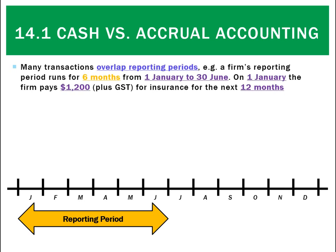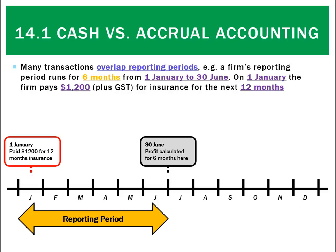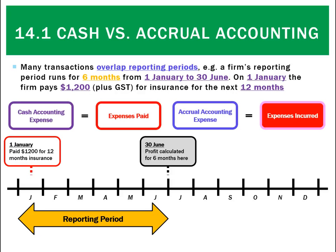The reason why is that many transactions overlap reporting periods. For example, let's say a firm's reporting period runs for six months from the 1st of January to the 30th of June. On the 1st of January they pay $1,200 for insurance for the next 12 months. So under cash accounting, the expense paid is $1,200 because we look at whether the expense has actually been paid, and since it has been paid, all of it is classified as an expense.